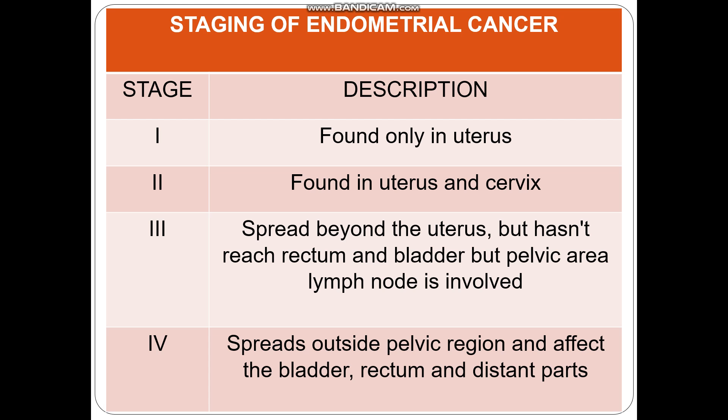Coming to the stages, there are mainly four stages. Stage one means the cancer is found only in the uterus. Stage two, it will be found in the uterus as well as in the cervix. Stage three means it can spread beyond the uterus and it can affect the pelvic area and the lymph nodes in the pelvic area.